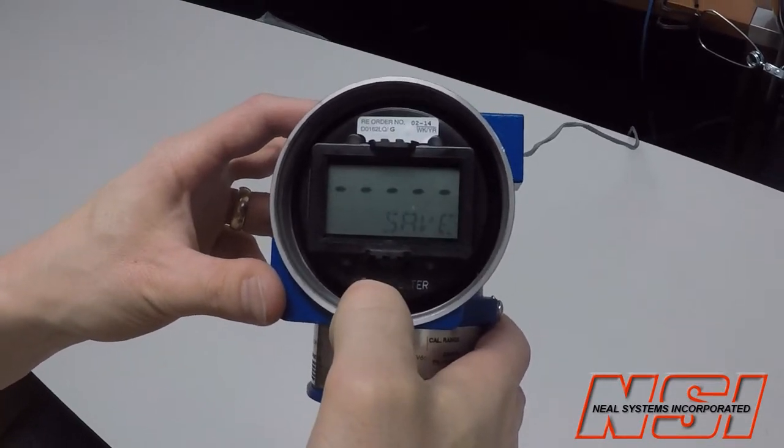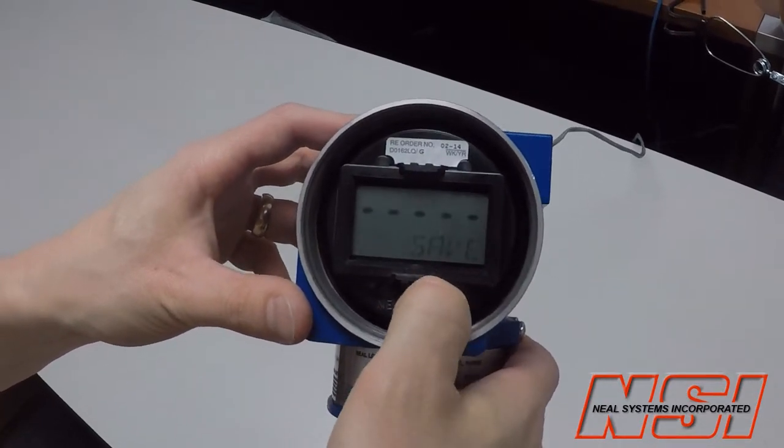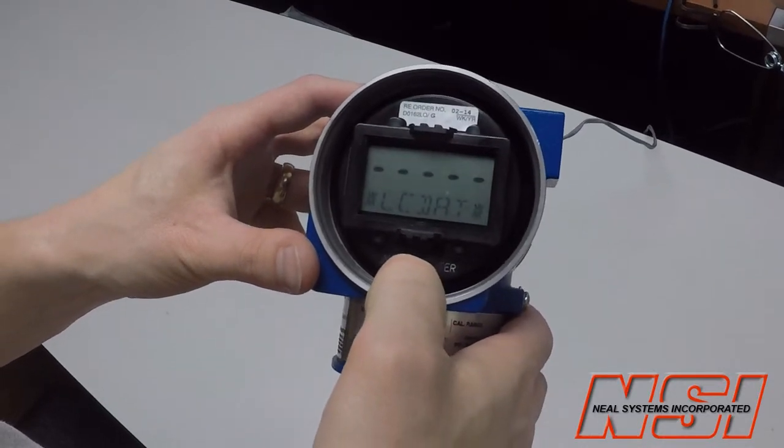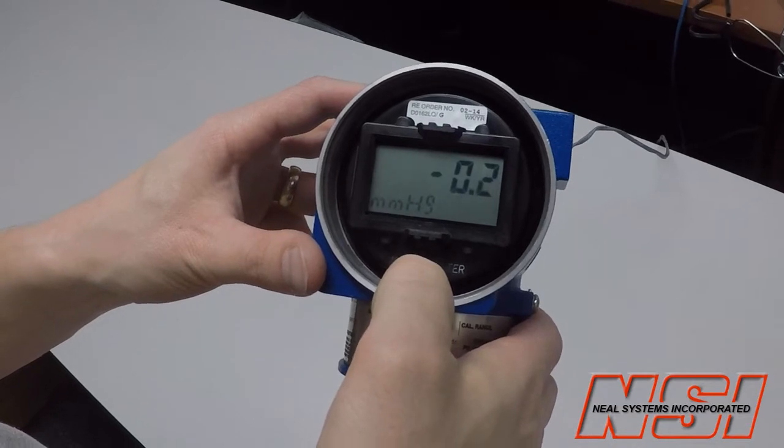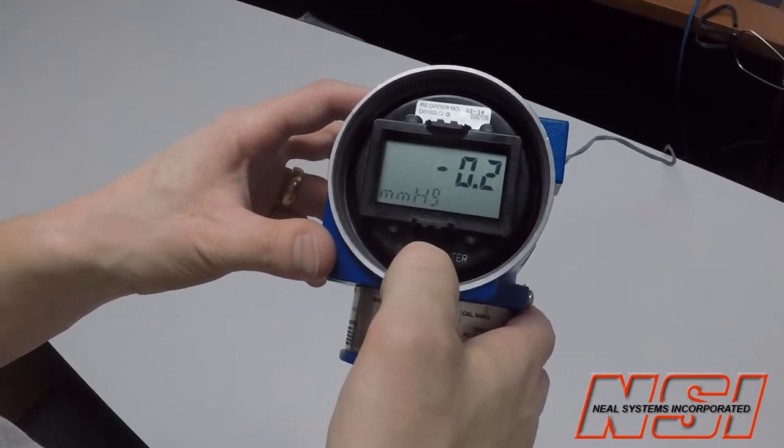and then it's going to give me the option to Save, and I will hit Enter. Okay, now we're displaying in our new units, in our new range, and we're done.